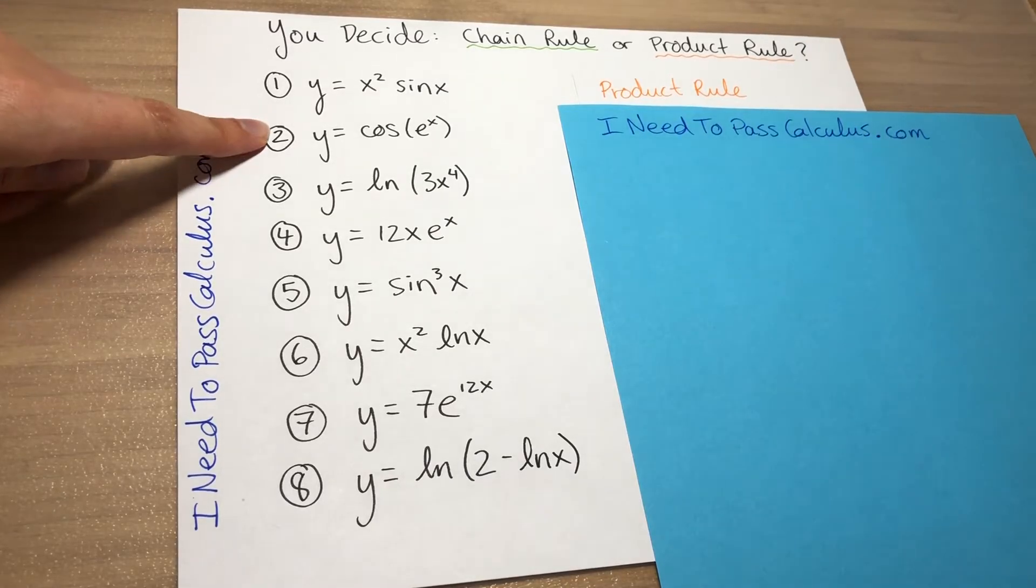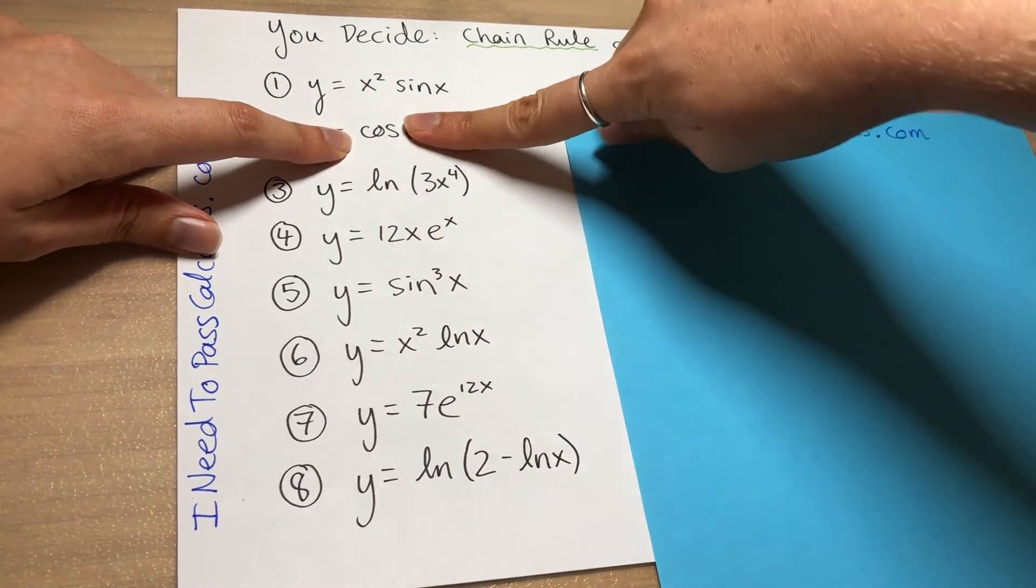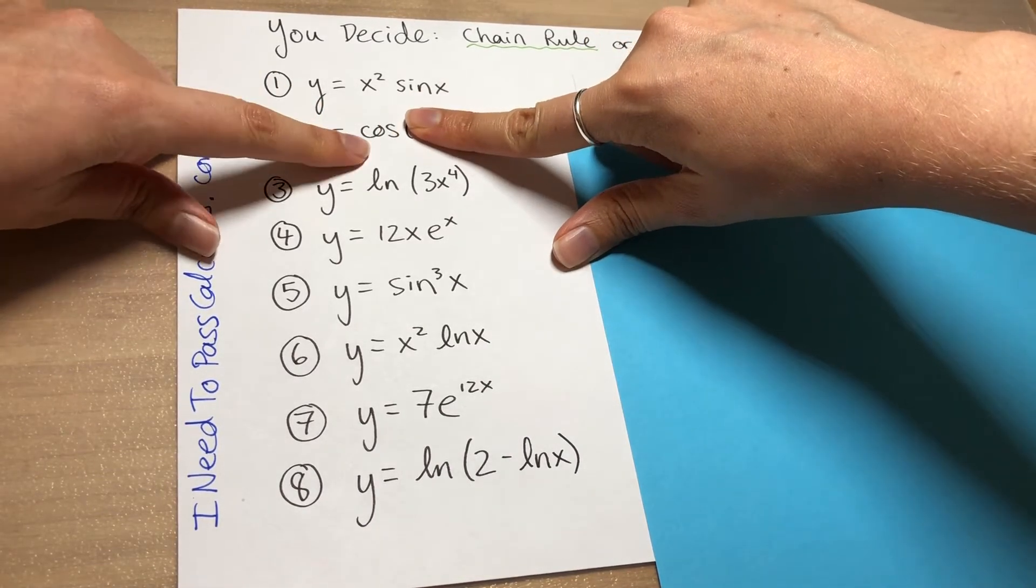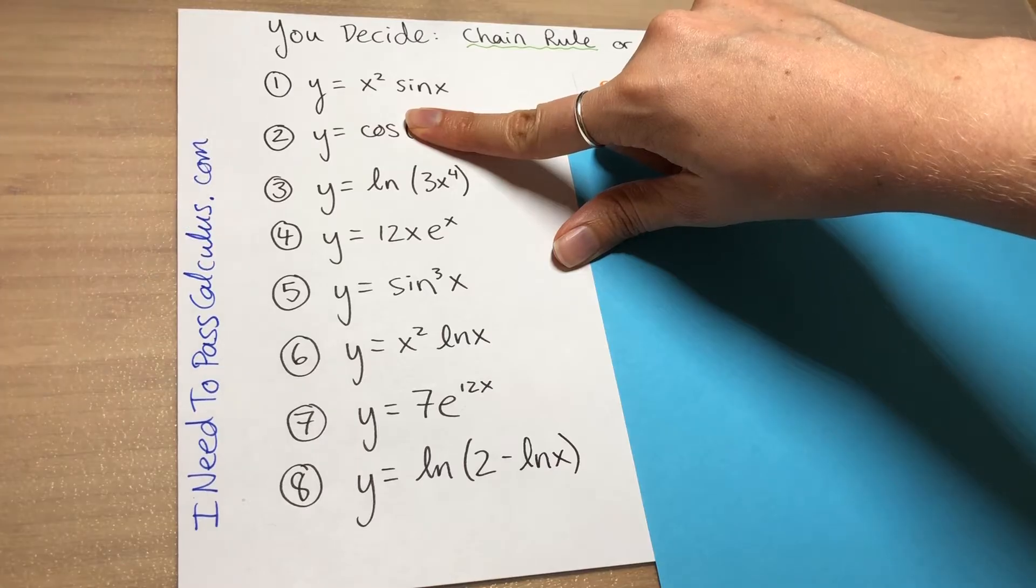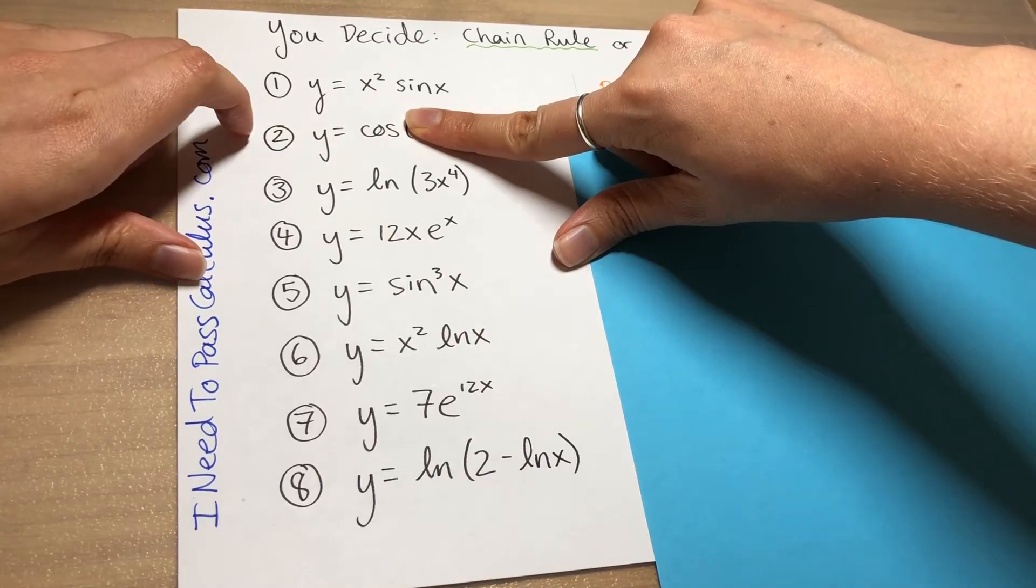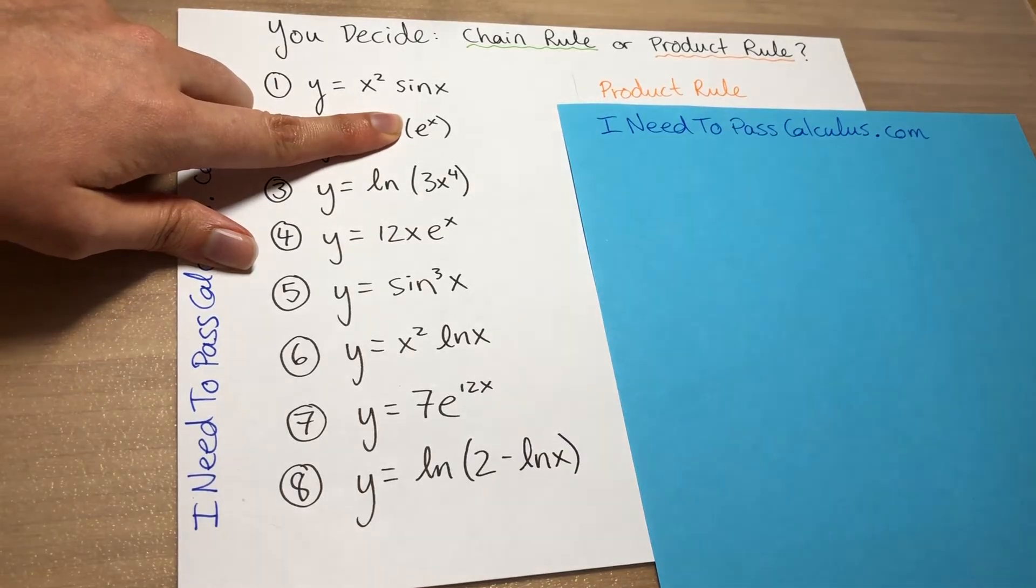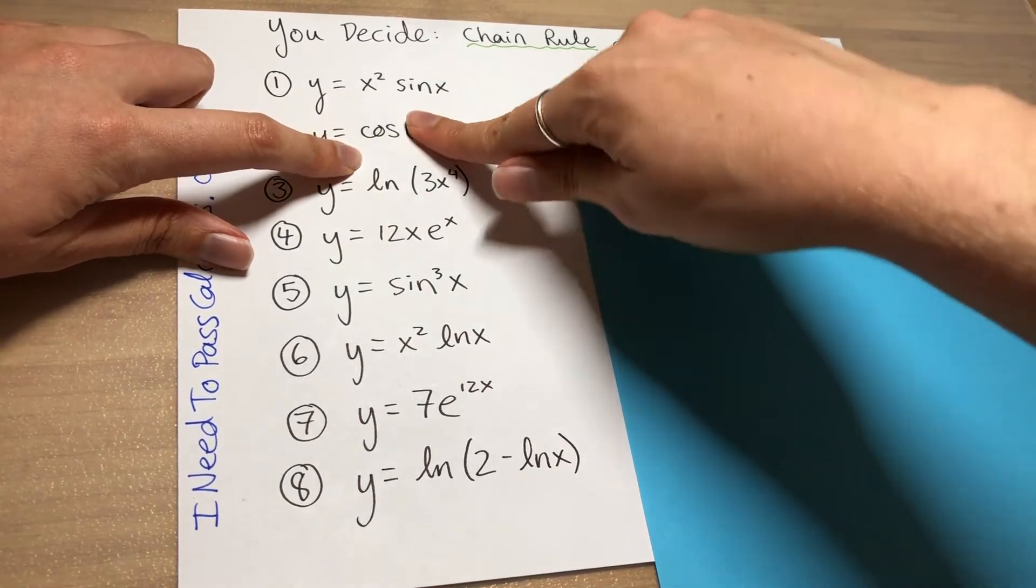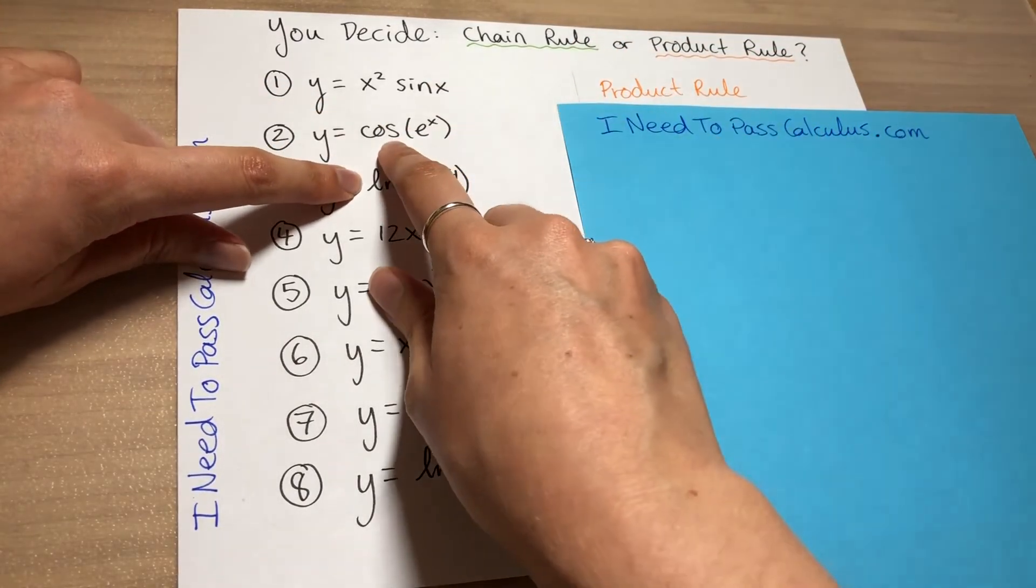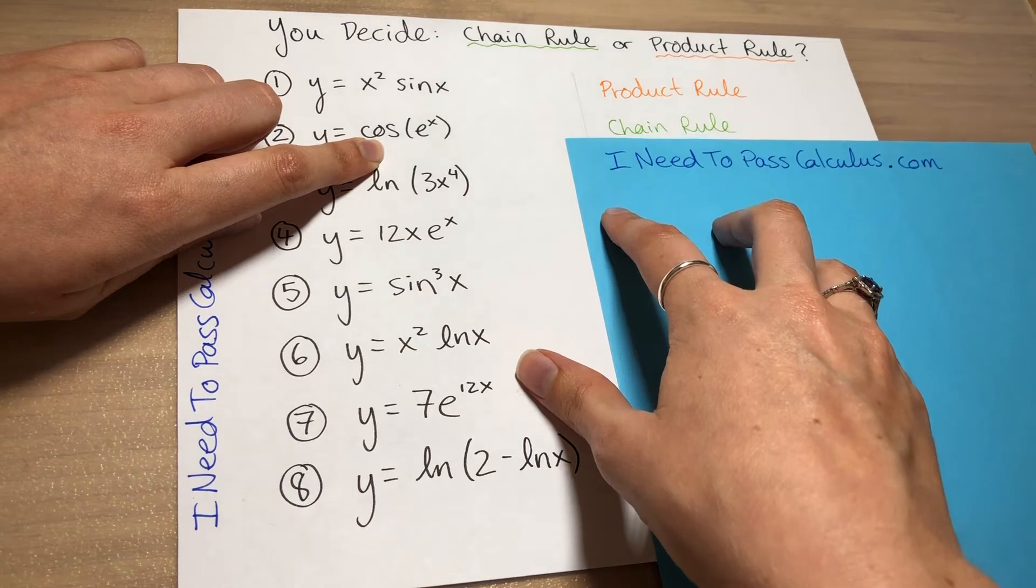For problem two now, our two main pieces of this function are the cosine and the e to the x. And if we cover up the e to the x and just look at the cosine, that's just a cos, it's just cosine but without any variable there. So that's actually not a standalone function. If we cover up the cosine part, we get e to the x, which is a perfectly fine standalone function. But because both parts can't stand alone as their own function, that's a hint that this is actually chain rule. This is composition of functions, and so you have to use the chain rule.